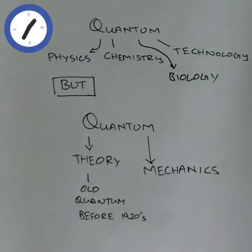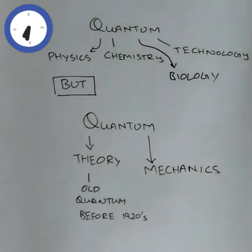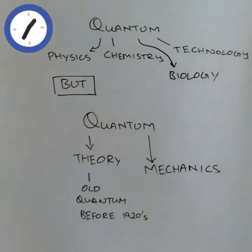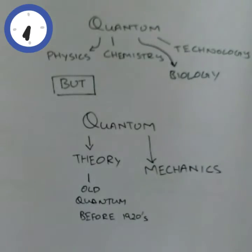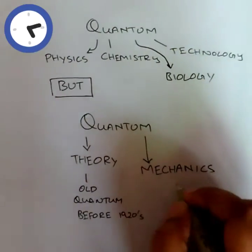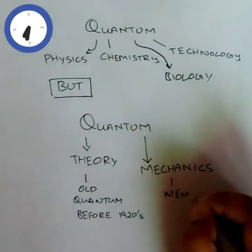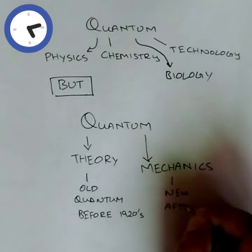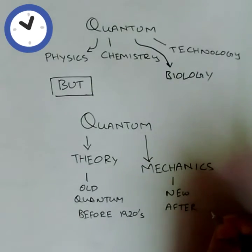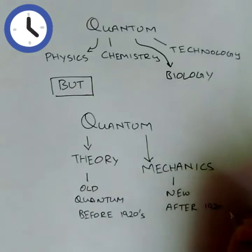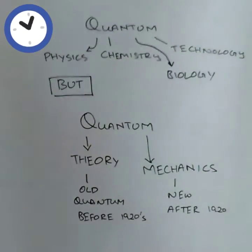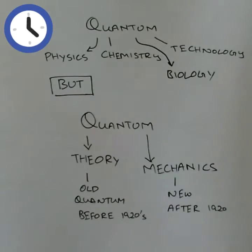But quantum mechanics was the modern way of quantum that developed after 1920. This was the new quantum after 1920 and was developed by Heisenberg, Bohr, Schrödinger—especially Schrödinger, actually—and this thing deals with all the weird stuff of quantum, like waves, wave functions.